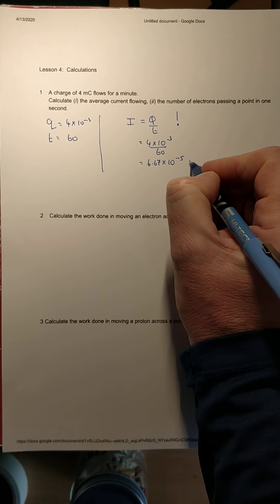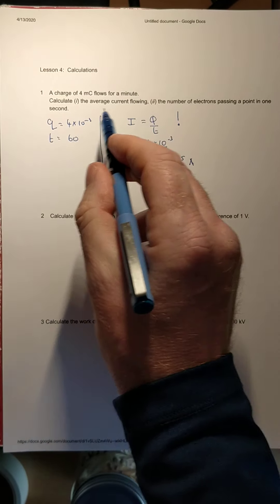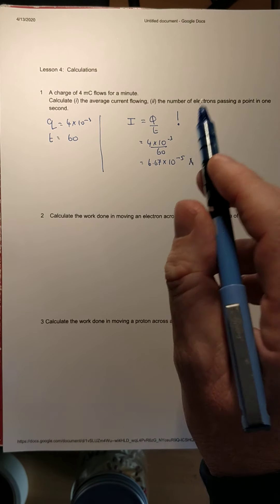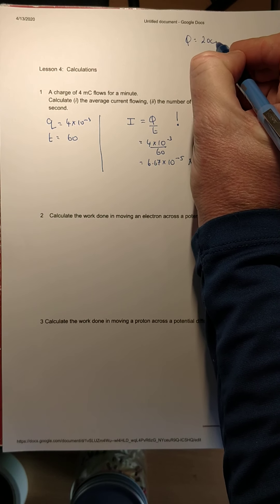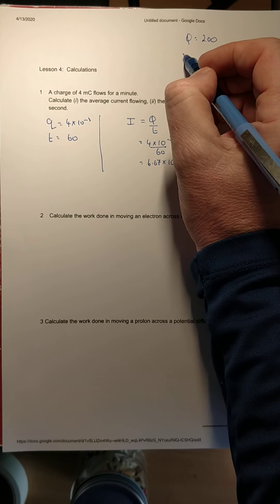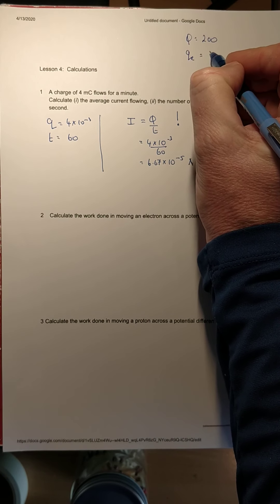Now the second part is interesting: the number of electrons passing a point in one second. Let's take a simpler example. Let's say the charge was 200 and the charge in each electron was 40.